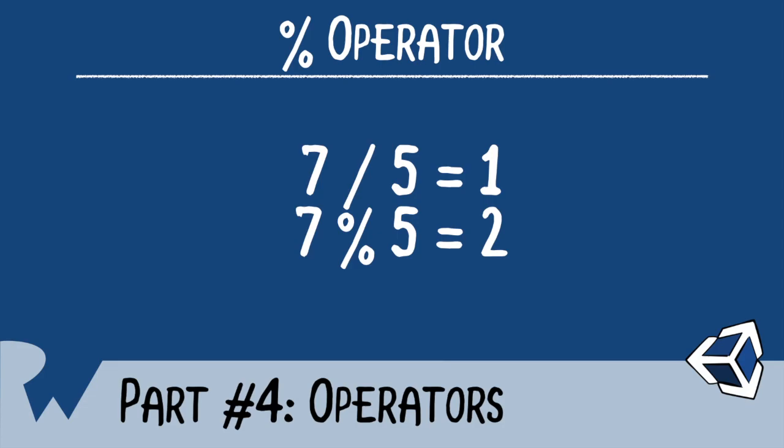This is a handy operator to determine whether a number is even or odd. Take, for instance, the statement x modulus 2. If x is equal to 10, then the result of the modulus operation is 0. Hence, the number is even. If the result is greater than 0, then we know the number is odd. Let's see these operators in action.